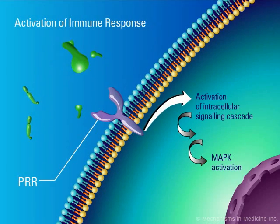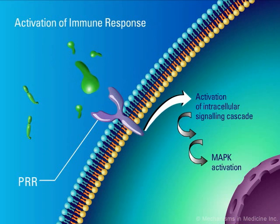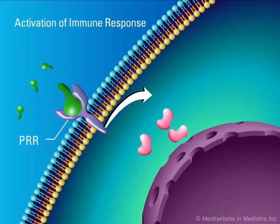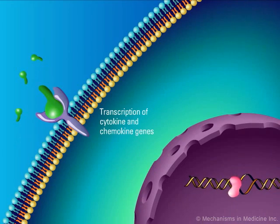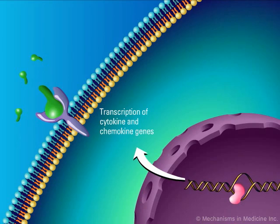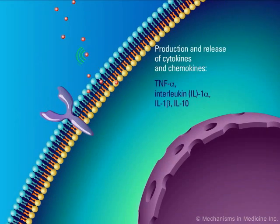Fungus or fungal particles bind to cell surface pattern recognition receptors and activate intracellular signaling cascades. MAP kinases are activated, and additionally NF-κB is translocated to the nucleus. At the nucleus, genes for cytokines and chemokines are transcribed. Cytokines and chemokines are synthesized and released from macrophages and dendritic cells.